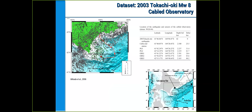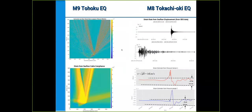For the Tokachi dataset, the data consists of accelerometer data from OBSs one, two, and three, as well as pressure stations PG1 and PG2. I'm doing a side-by-side comparison, though it's not exactly fair because the Tohoku simulation had a spatial resolution of about 170 kilometers, whereas the OBS station separations are about 20 kilometers. We can more or less compare the horizontal displacement and the strain due to seafloor compliance. We still see a two-order-of-magnitude difference between both datasets compared side by side.